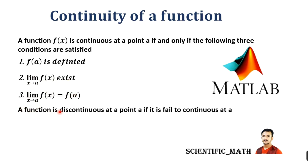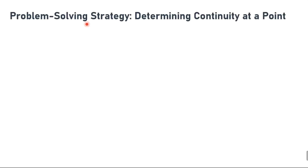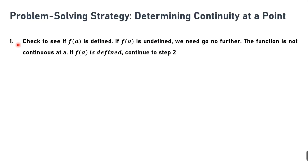A function is discontinuous at a point a if it fails to be continuous at point a. Problem-solving strategy for determining continuity at a point: first, check to see if f(a) is defined. If f(a) is undefined, we need go no further.